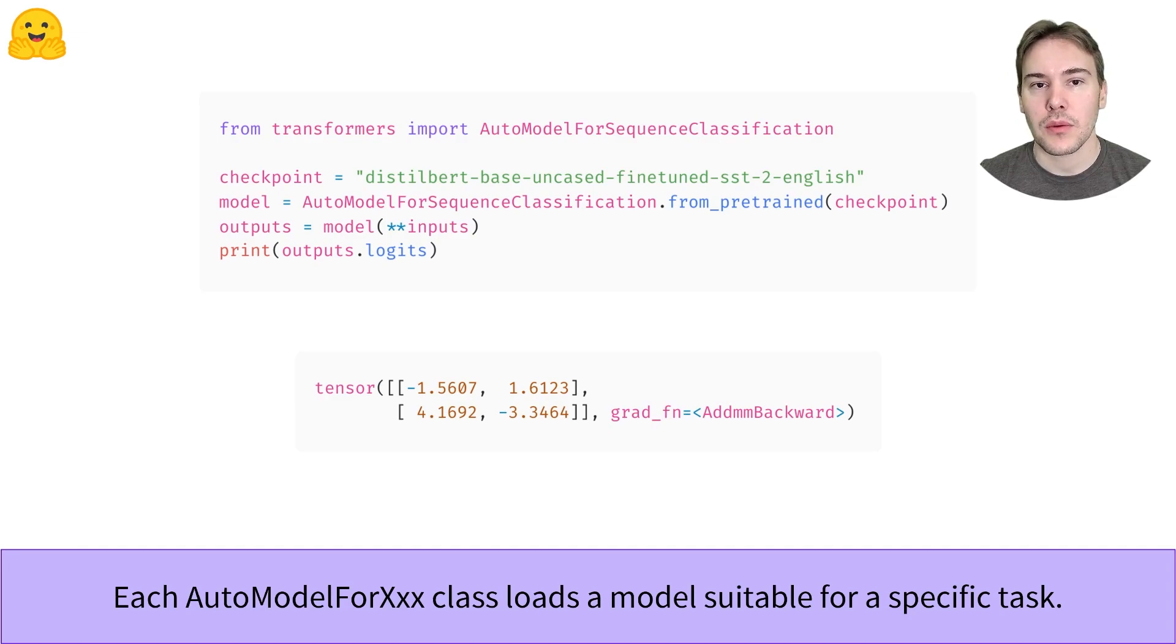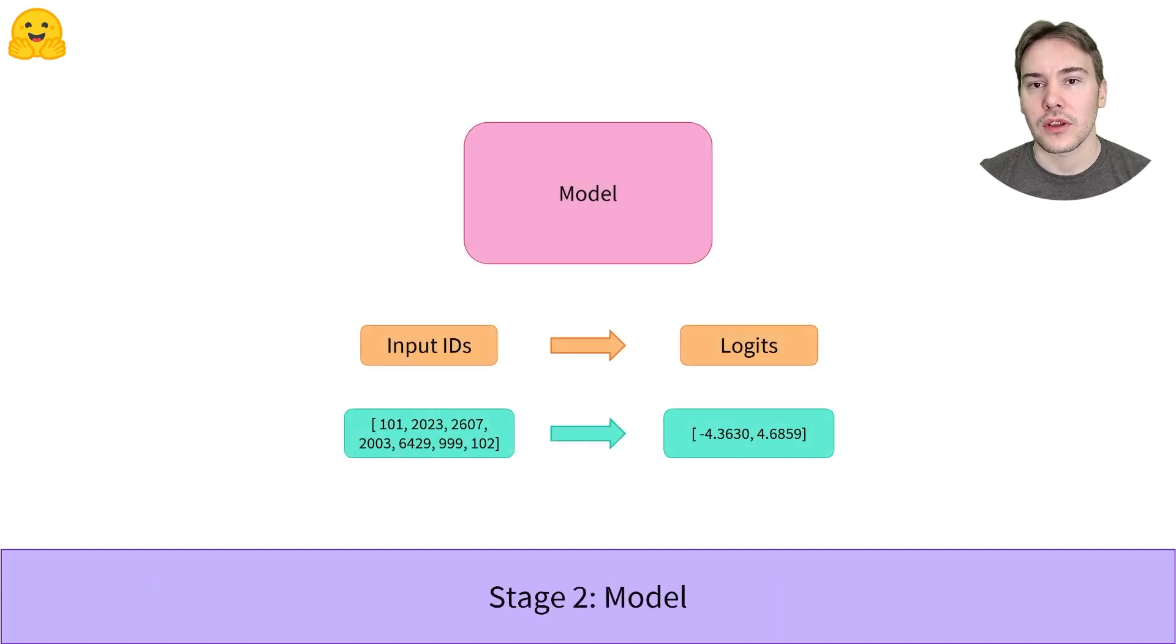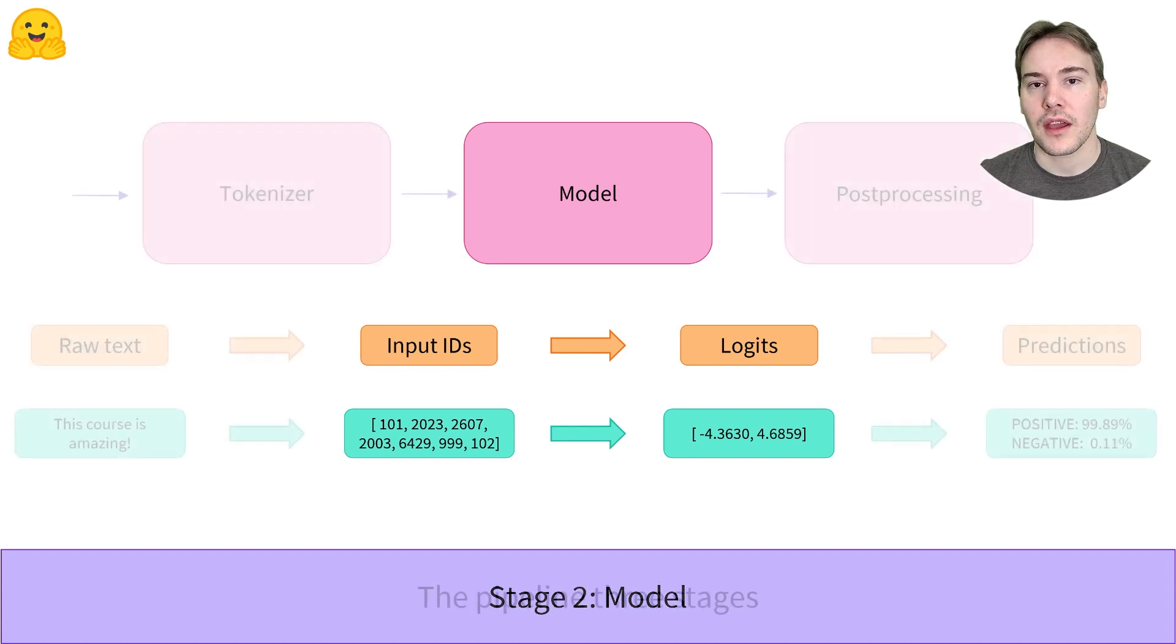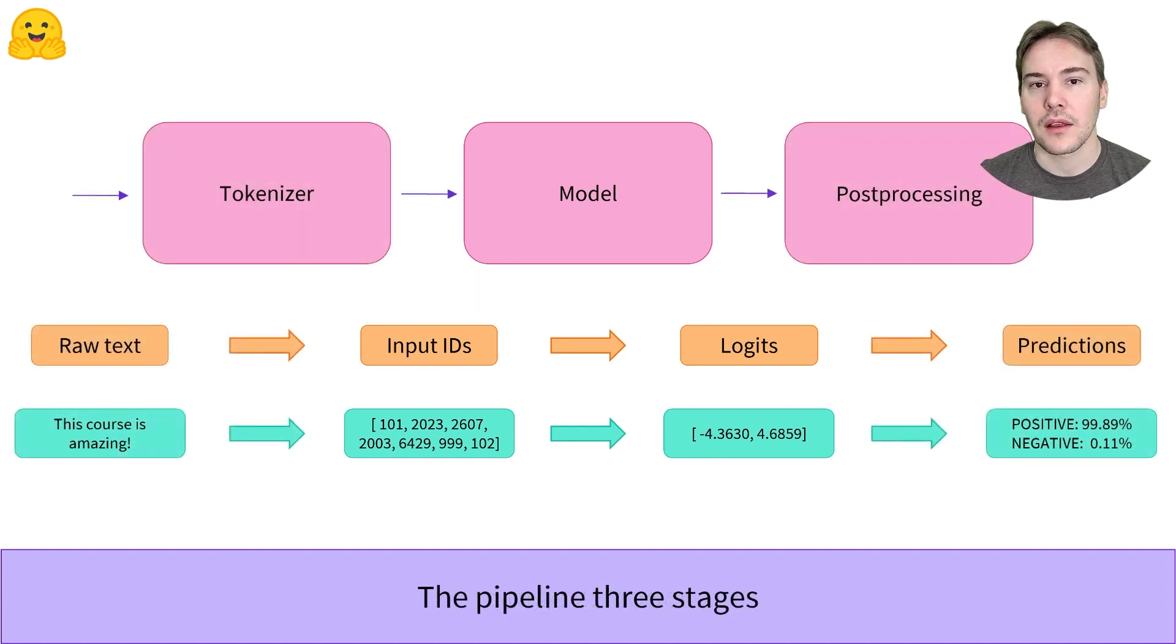Those outputs are not probabilities yet. We can see they don't sum to one. This is because each model of the transformers library returns logits. To make sense of those logits, we need to dig into the third and last step of the pipeline, post-processing.